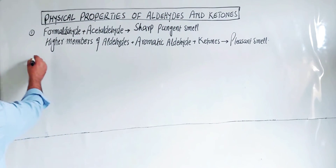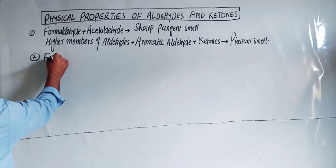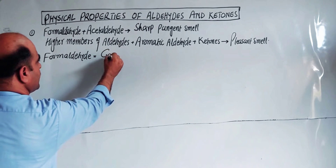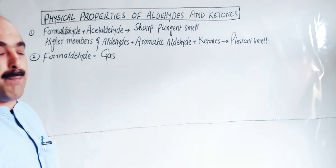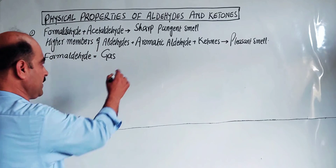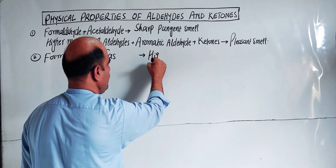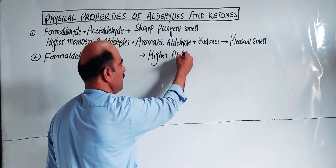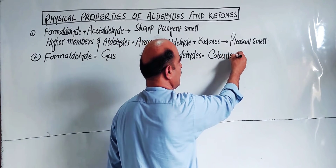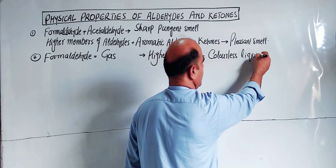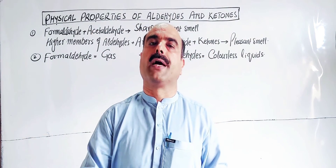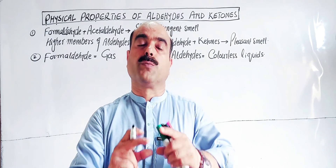Formaldehyde, the very first member of aldehyde, is a gas at room temperature. Higher aldehydes are colorless liquids. As chain length increases, attractive forces among molecules become stronger, so the physical state changes from gas to liquid.